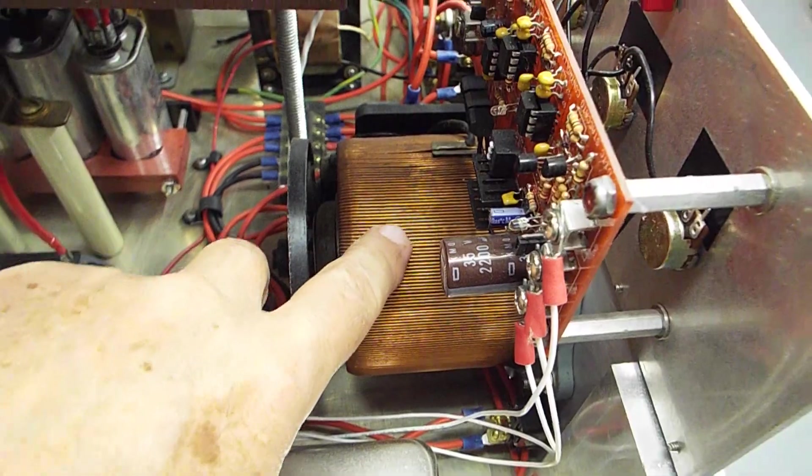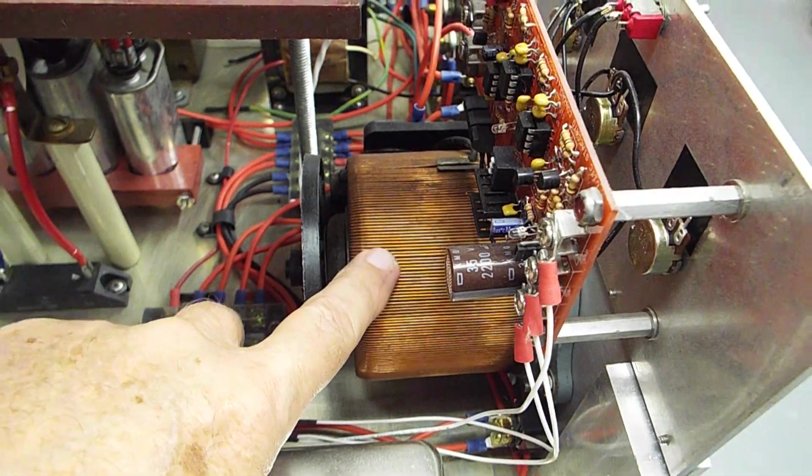And down there, you can see, this is the main variac, controls the voltage to the microwave oven transformer.